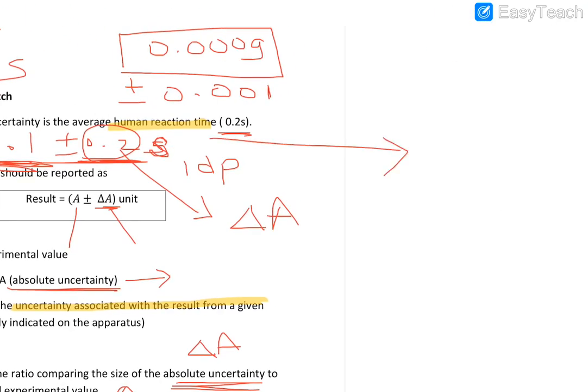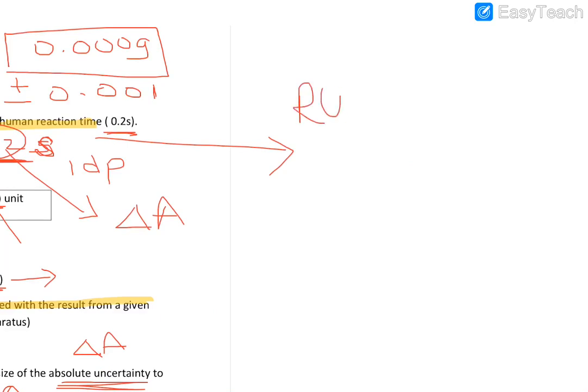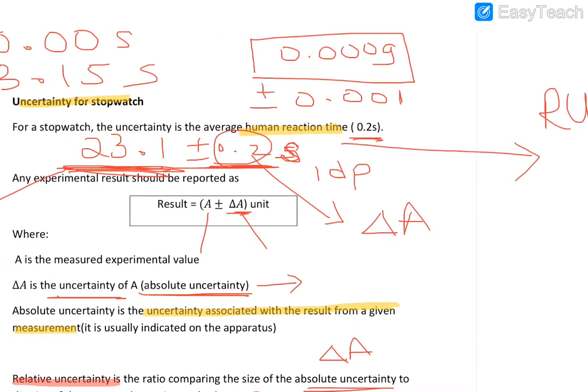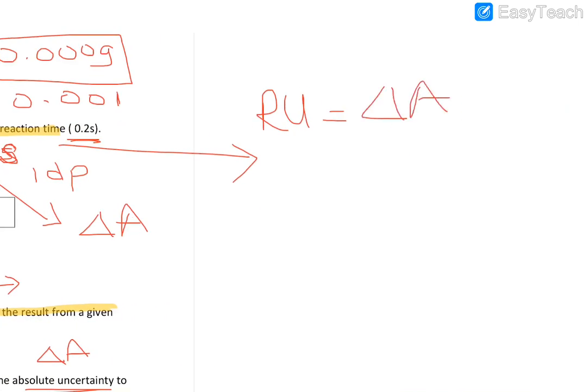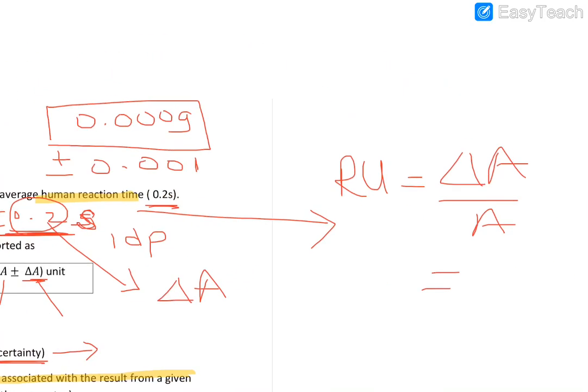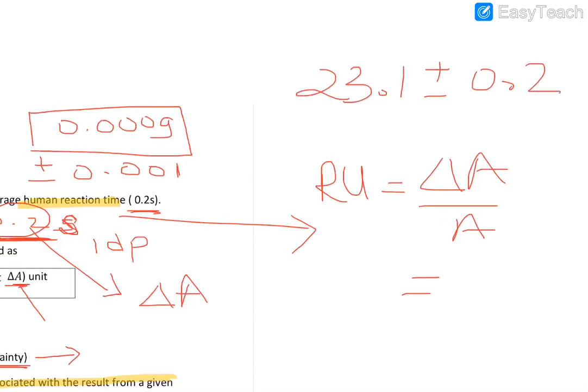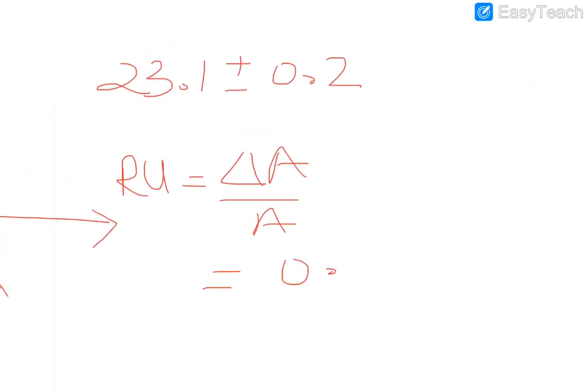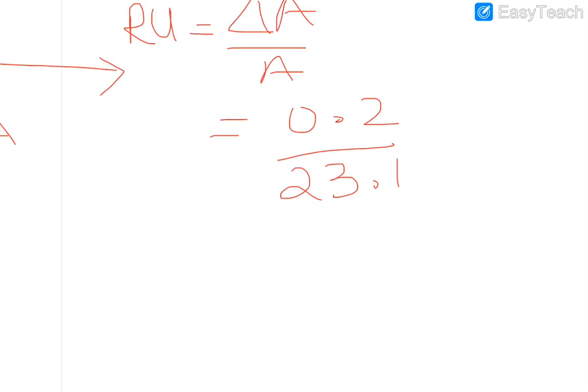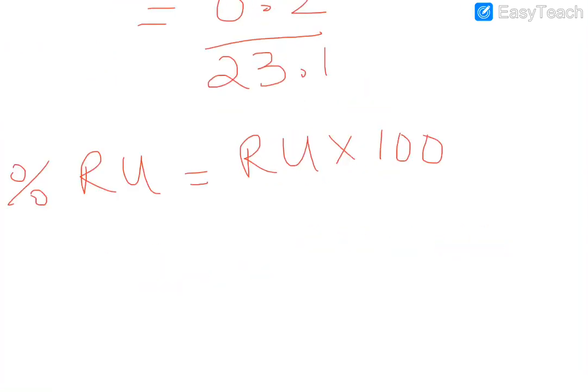Then the relative uncertainty would equal delta A over A. Let's rewrite this: 23.1 plus minus 0.2. So the delta A would be 0.2, the A would be 23.1. You can calculate it, do the maths. The percentage relative uncertainty would be just the relative uncertainty times 100. Or you can compute it again: 0.2 over 23.1 times 100.